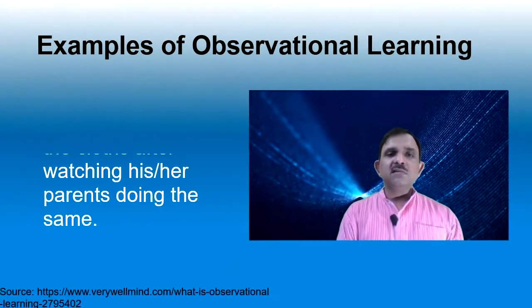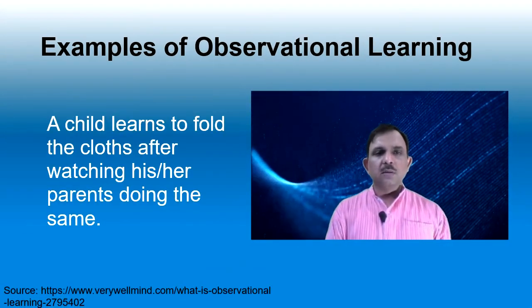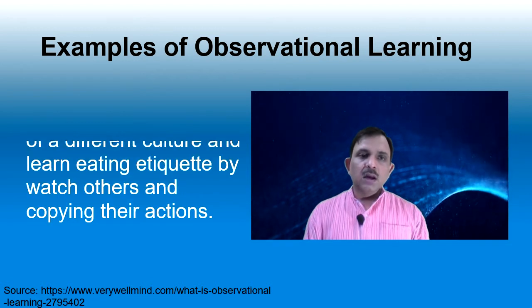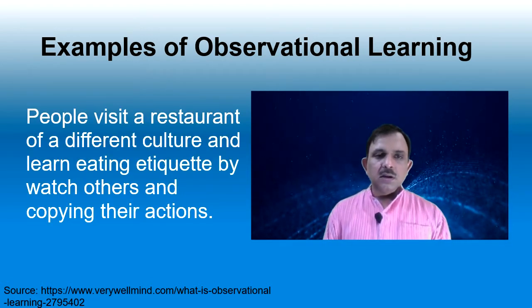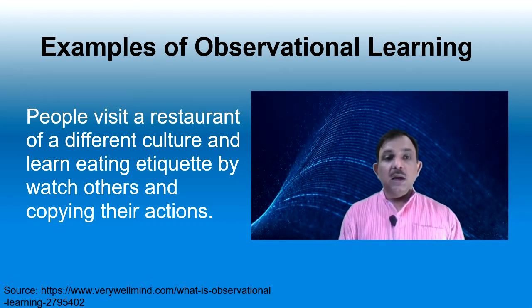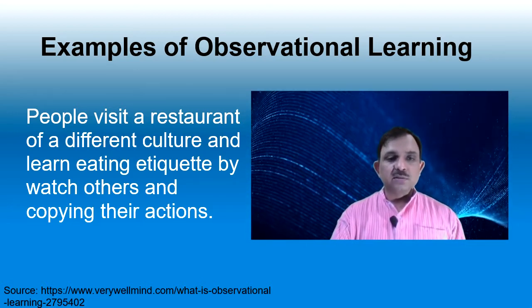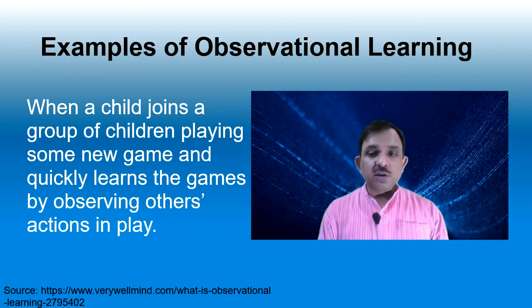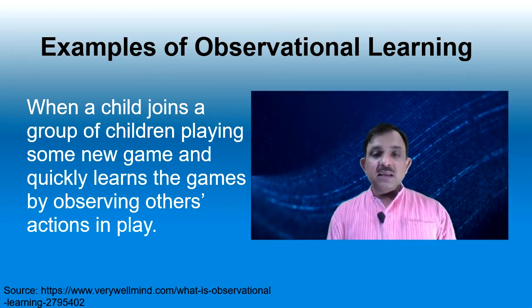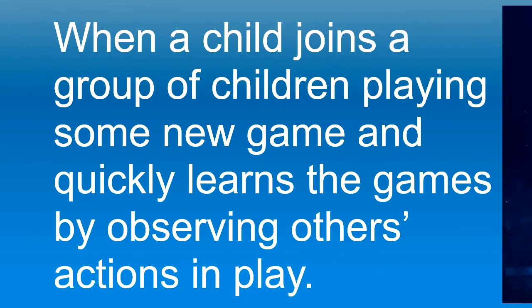Let us look at some examples of observational learning. A child learns to fold clothes by observing their parents doing the same — they observe, practice, and imitate. When people visit a restaurant of a different culture and don't know the eating etiquettes, they learn by watching others and copying their actions. When a child joins a group playing a new game, the child quickly learns the game's rules and laws by observing others' actions.